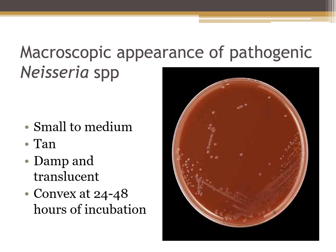Macroscopically, Neisseria species are small to medium in size. On blood agar they're gamma hemolytic, but we should not evaluate hemolysis on chocolate agar. On chocolate agar they're tannish to slightly greenish, damp and translucent, and convex at 24 to 48 hours of incubation. These are considered slow growers, similar to Micrococcus luteus — very small at 24 hours and larger at 48 hours.